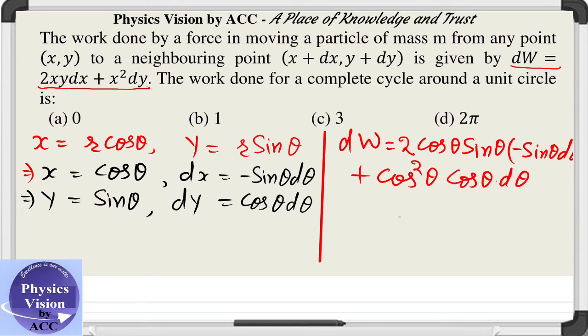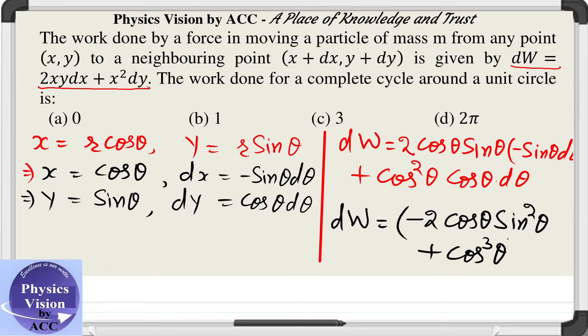Writing it again, what is the value of dW in terms of θ? This is given to be -2 cos θ sin² θ plus cos³ θ, into dθ.